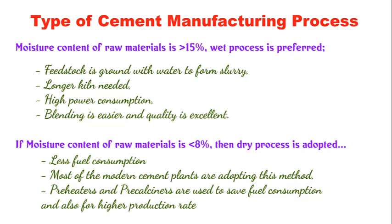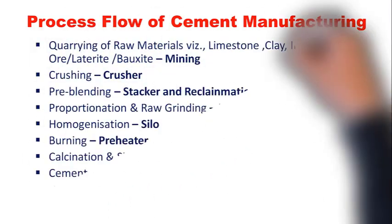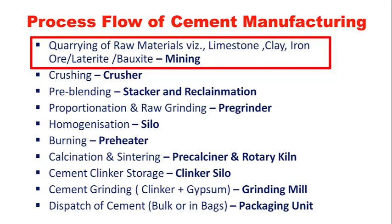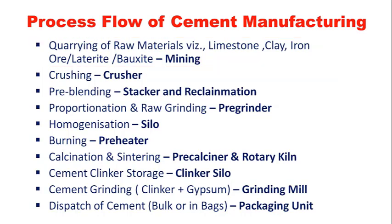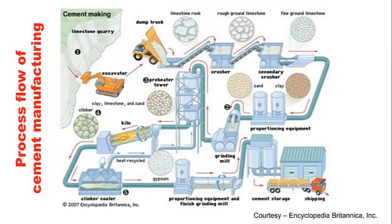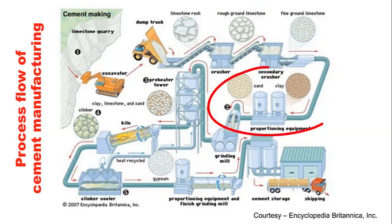Next, let's see the process flow in cement manufacturing — the sequence of operations. First, raw material is quarried from the mines, then it goes to the crushing section where limestone is crushed to smaller particles. After that, it is stored and pre-blended before going to the grinding section, where limestone and other raw materials are ground to very fine powder. Then it goes to the raw mix silo where the raw material proportions are mixed and homogenized.